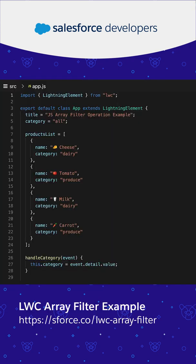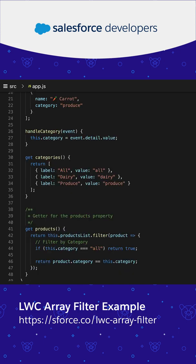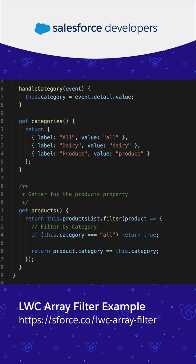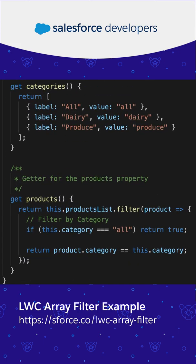You can also use filter to perform more complex operations. Let's take a look at this LWC example. Here we are filtering a list of products by a selected category. Notice that we return true when the category is all.